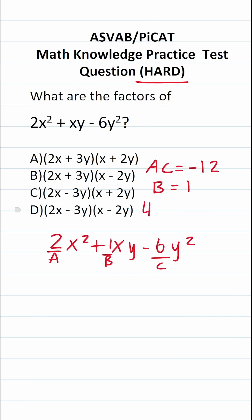So that's going to be positive 4 and negative 3. 4 times negative 3 is negative 12. 4 plus negative 3 is positive 1. We're going to take these two numbers and rewrite this middle term such that we can factor this by grouping. So let's go ahead and do that.